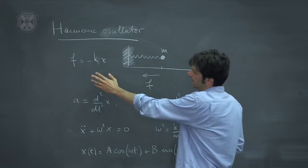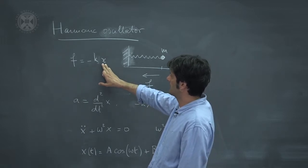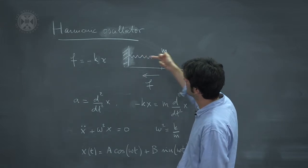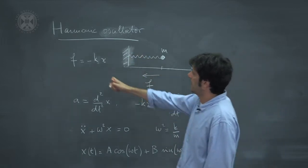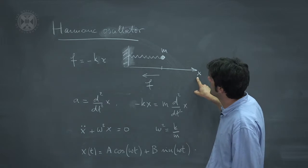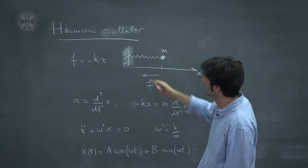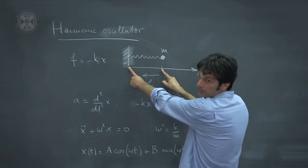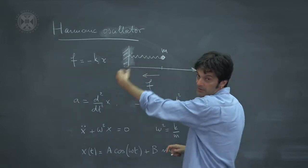The force is given by Hooke's law, which says that f is equal to minus kx. So the force tends to pull the particle towards the origin where the spring is attached, and k is a characteristic of the spring. In this one-dimensional plot the force points towards the origin, and the size of the force is dictated by how far you are from the origin — the further away you go, the bigger the force.